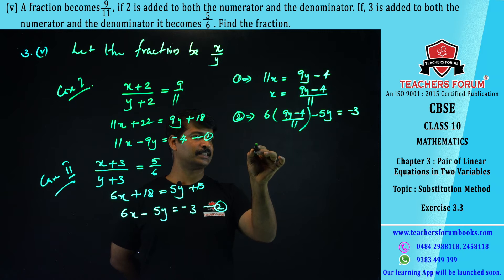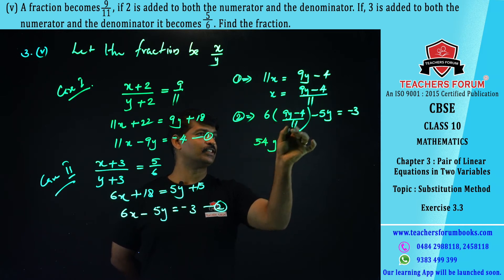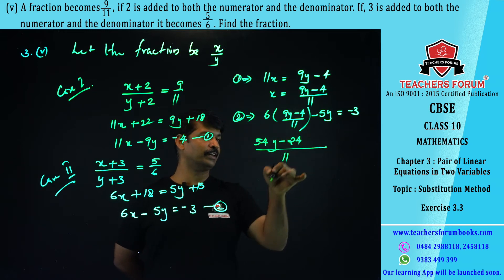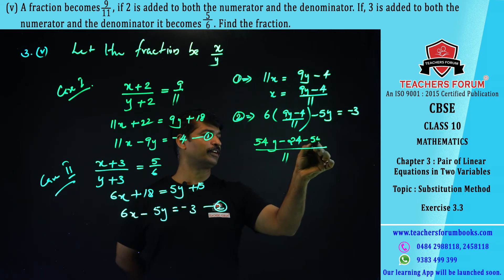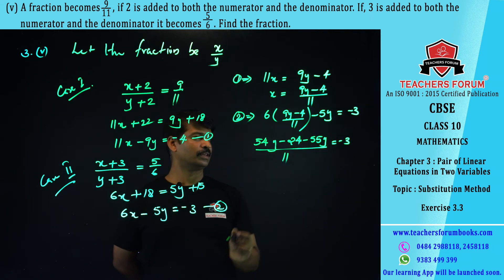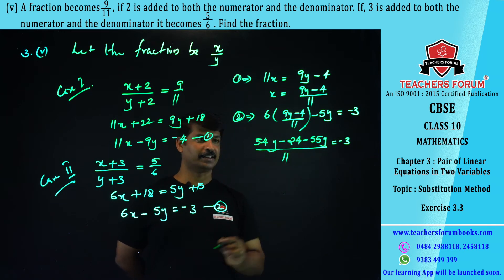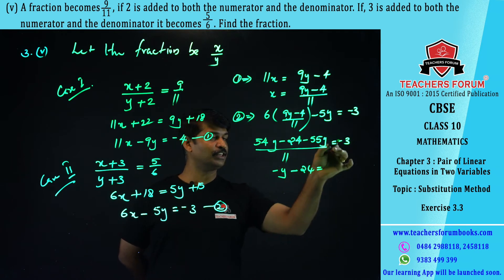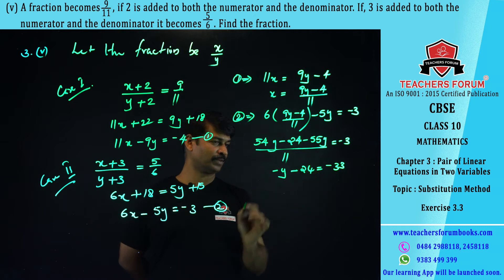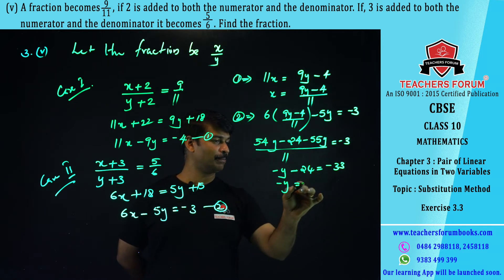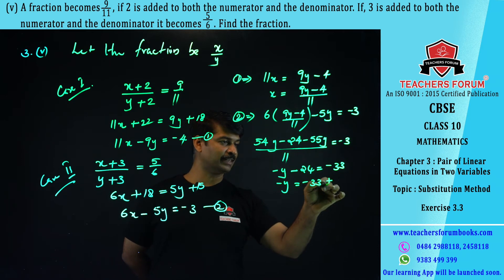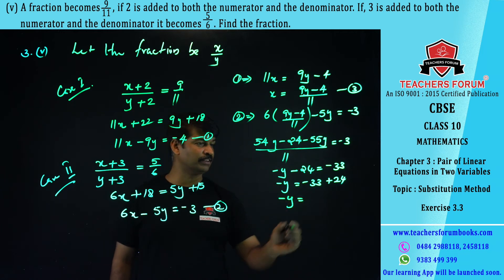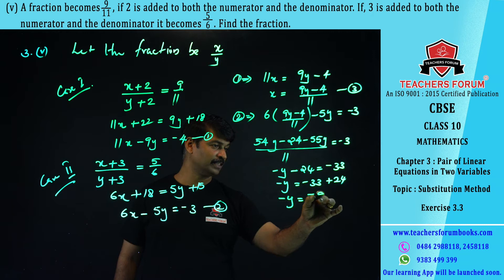Taking LCM as 11: (54y − 24)/11 − 5y = −3, which gives (54y − 24 − 55y)/11 = −3. The numerator becomes −y − 24 = 11 × (−3) = −33. So −y = −33 + 24 = −9, giving y = 9.